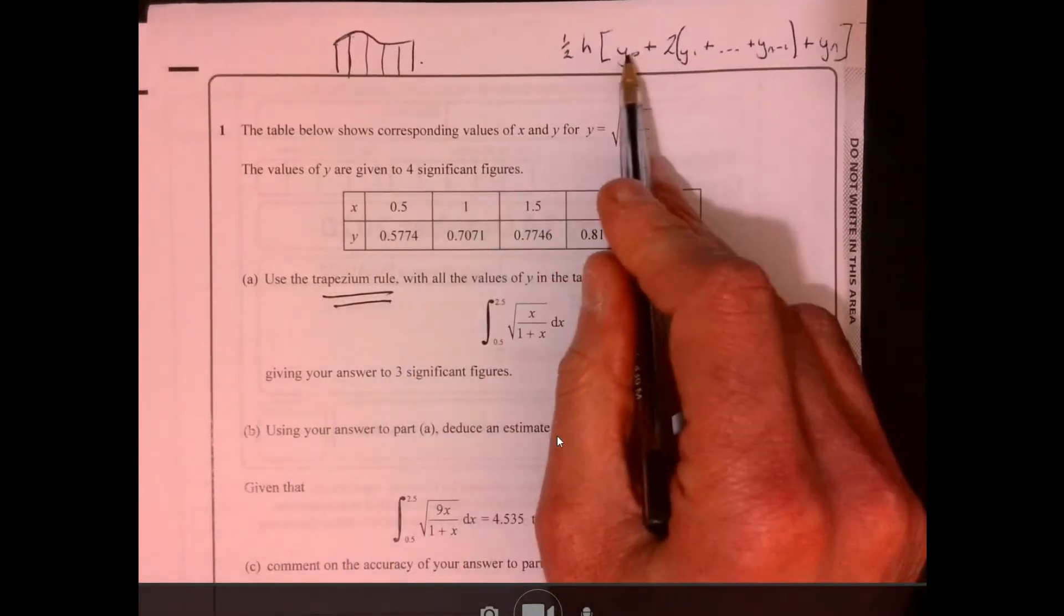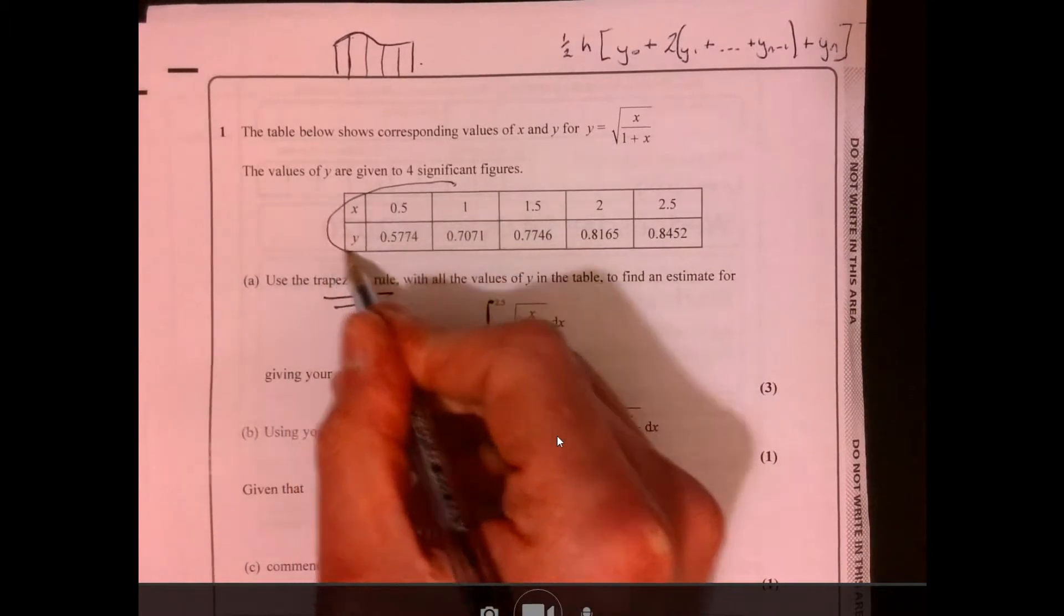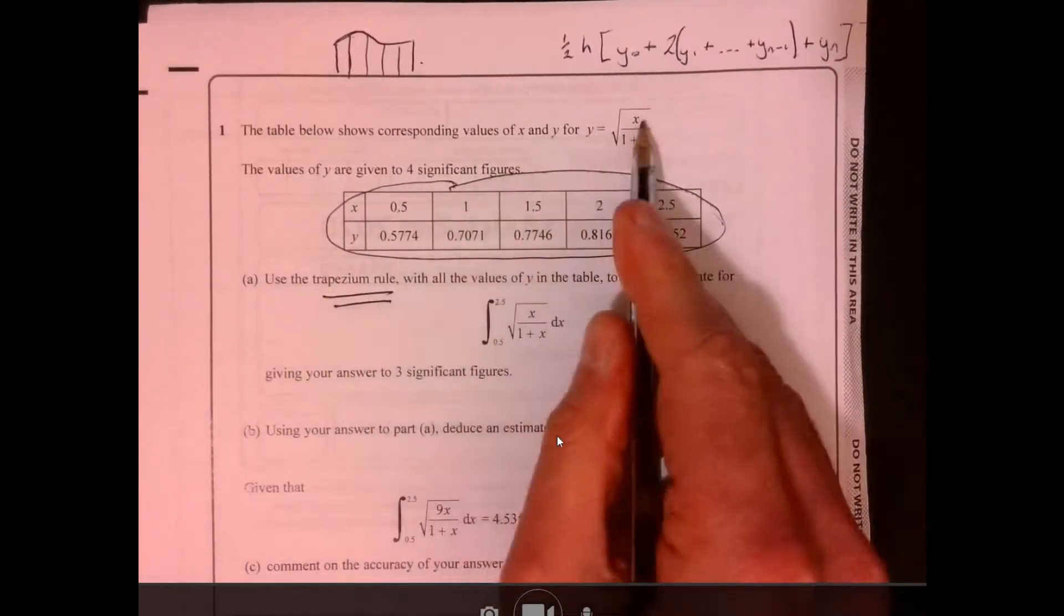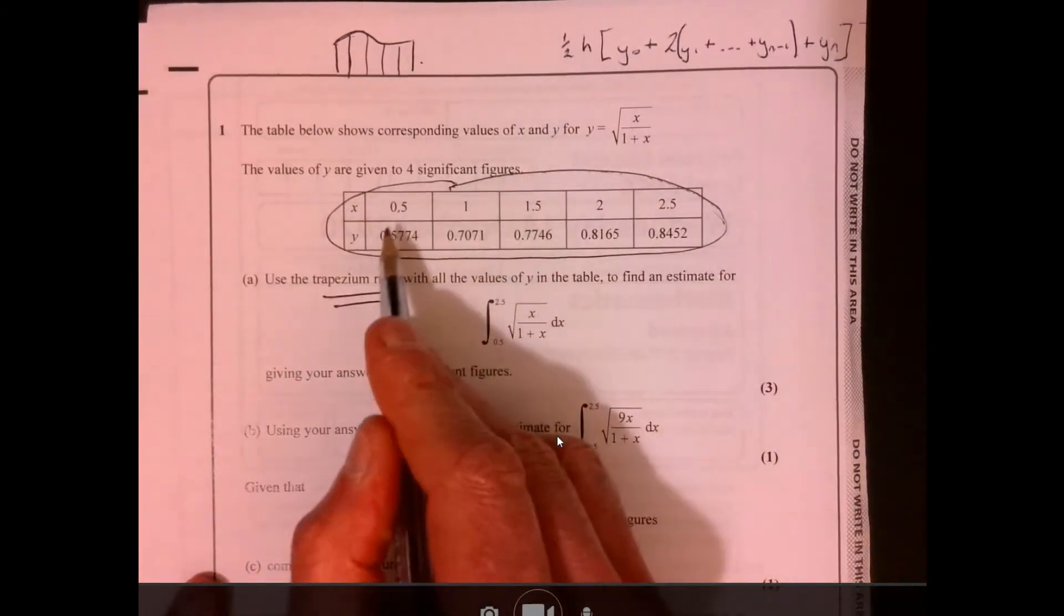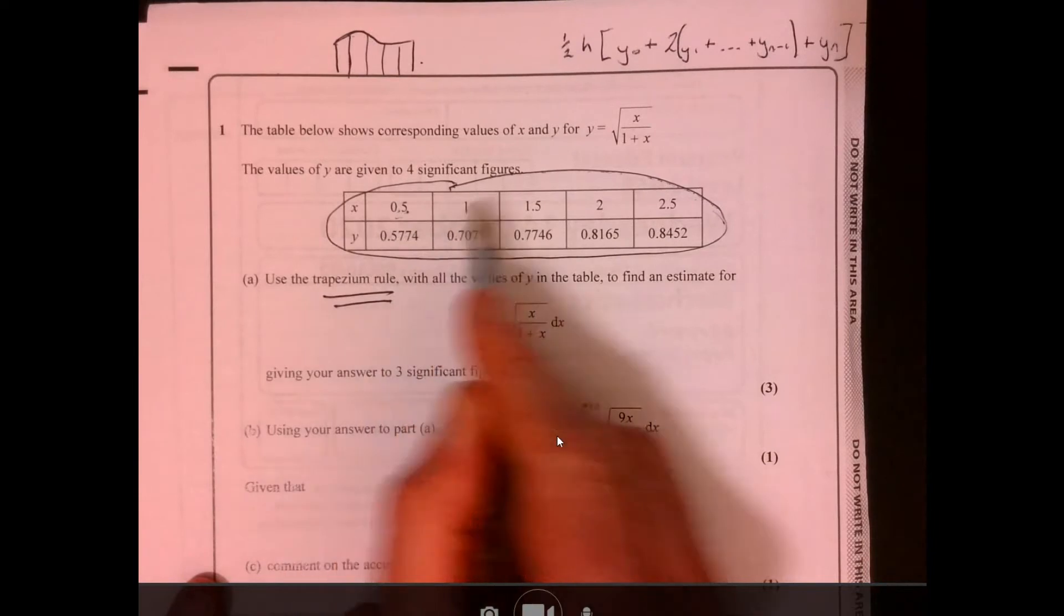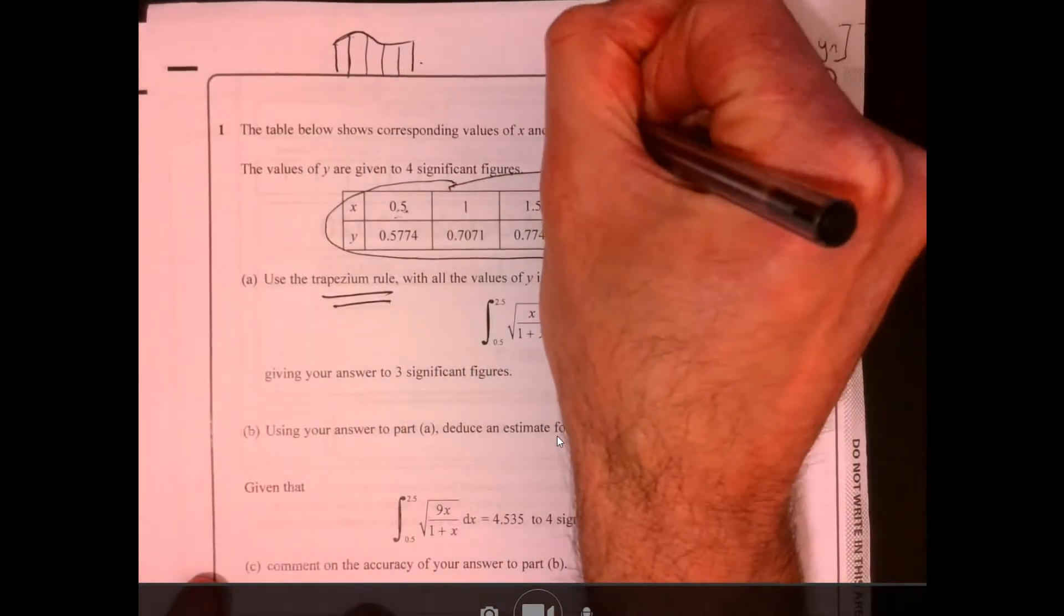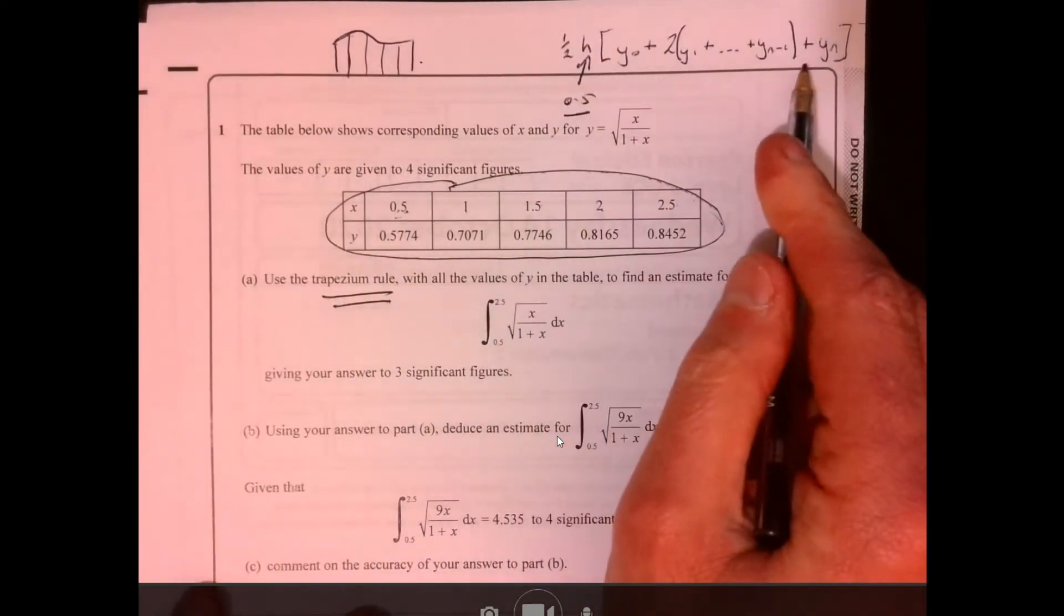So what you've got to do is you've just got to feed these numbers into here. And they've even been really kind and actually given us the values. So we don't even need to work those out. The only thing that we need to know for the formula is that's like the distance, the interval. So that bit is 0.5. And then we can just feed the rest in.